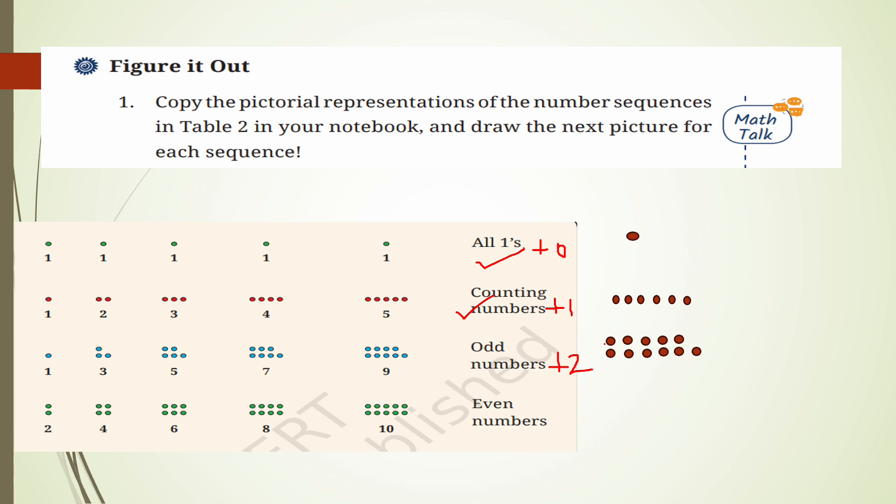For even numbers — 2, 4, 6, 8, 10 — the next number is 10 plus 2 equals 12. This is the pictorial representation with 12 dots.